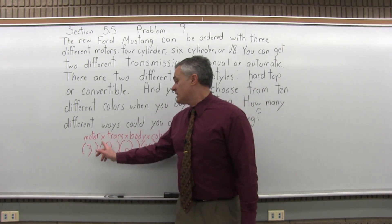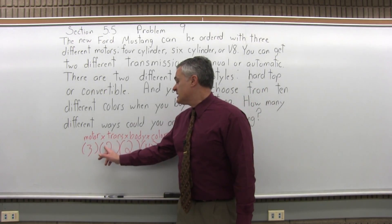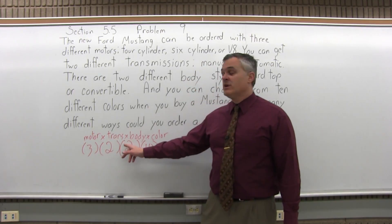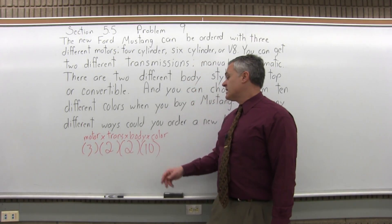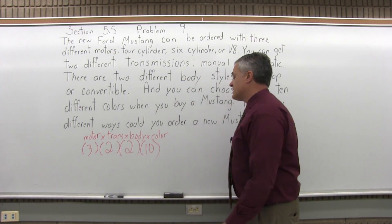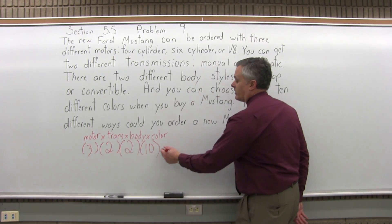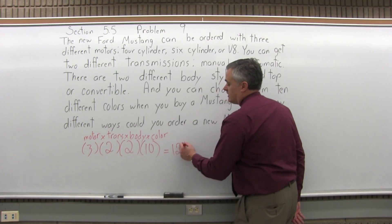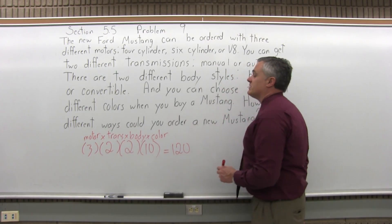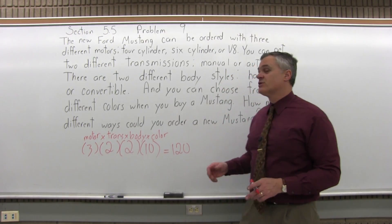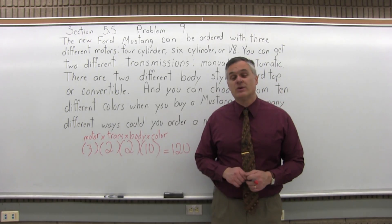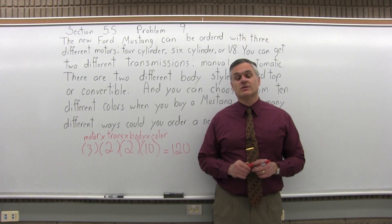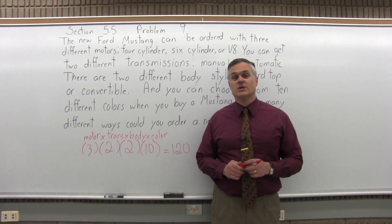Three times two is six, six times another two is twelve, twelve times ten will be a twelve with a zero on the end, or 120. So there are 120 different ways you can order a new Mustang.